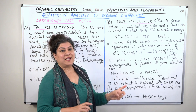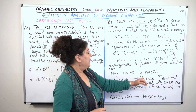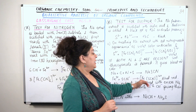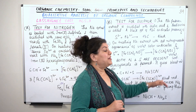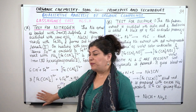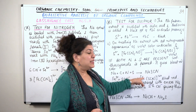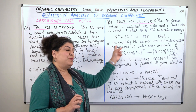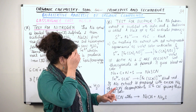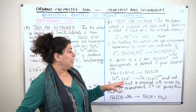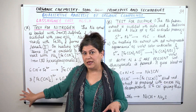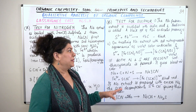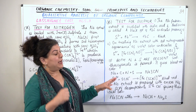When both nitrogen and sulfur are present in the compound, sodium thiocyanate is formed in the Lassaigne's extract instead of separate sodium cyanide and sodium sulfide. These ferric ions combine with thiocyanate ions and form ferric thiocyanate ions. Ferric thiocyanate ion is blood red in color. So if you get a blood red color instead of Prussian blue when testing for nitrogen, this means the compound contains not only nitrogen but also sulfur.